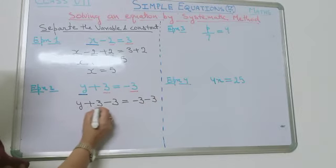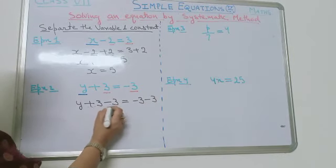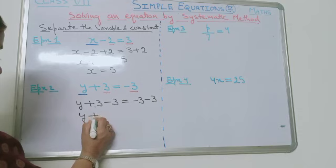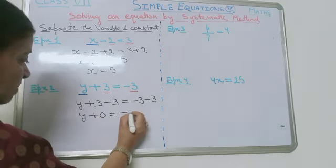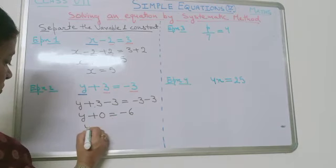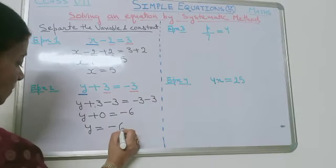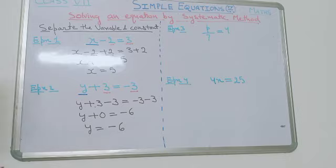These plus 3 and minus 3 will become 0, and minus 3 and minus 3 will become minus 6. So the answer is y is equal to minus 6.